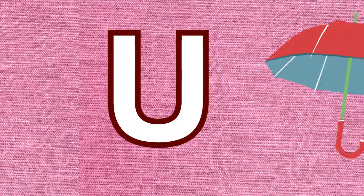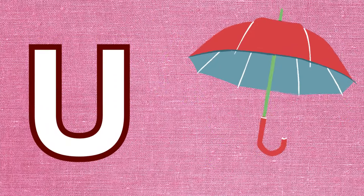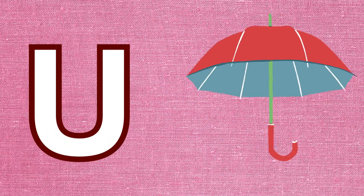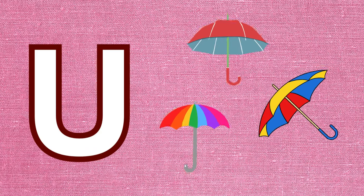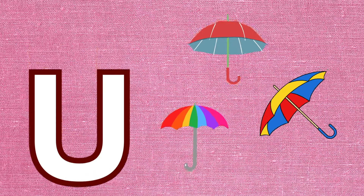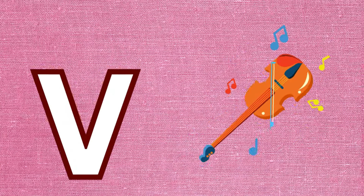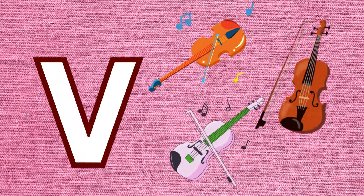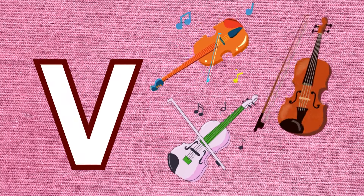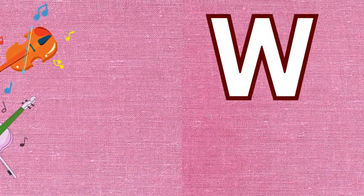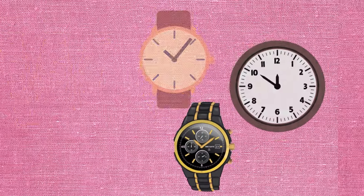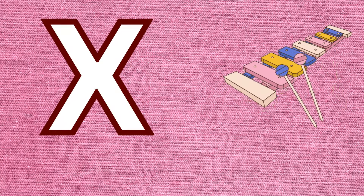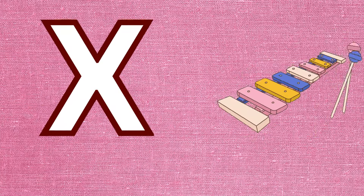A is for apple, a-a-apple. B is for ball, b-b-ball. C is for cat, c-c-cat. D is for doll, d-d-doll.